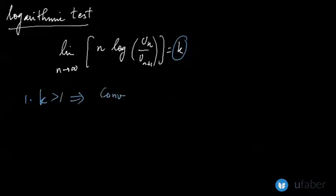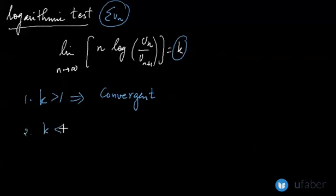Now if k is greater than 1, the series, that is sigma u_n, this series is convergent. Second, if the value is less than 1, then it is divergent.